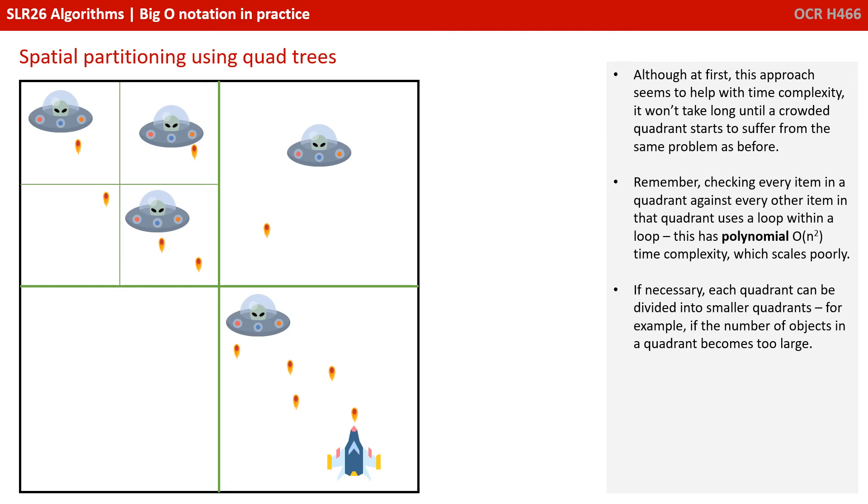Now, although at first this approach seems to help with the time complexity, it won't take long until a crowded quadrant starts to suffer from the same problem as before. Remember, checking every item in a quadrant against every other item in that quadrant uses a loop within a loop, which is polynomial time complexity, which scales poorly.